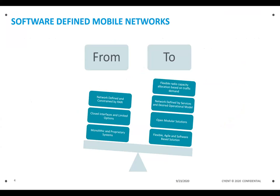The software-based programmability of the network helps enable rapid and comprehensive deployment of new functions and features. It supports new service introduction and improved radio network performance. As you can see in the picture, our network is currently defined and constrained by the RAN, with closed-loop interfaces and a monolithic proprietary system. All these will migrate into a flexible radio capacity allocation based on traffic demand, with network services defined by the operation model, a more modular approach, and the ability to deploy VNFs on COTS servers.